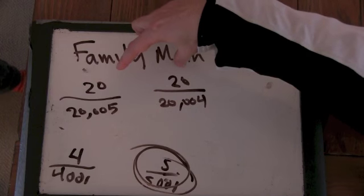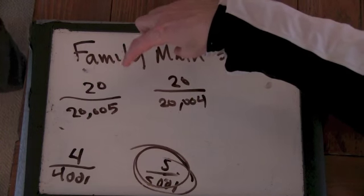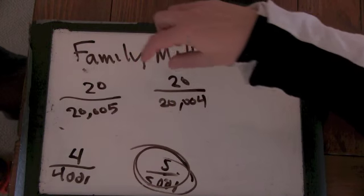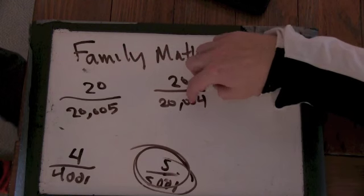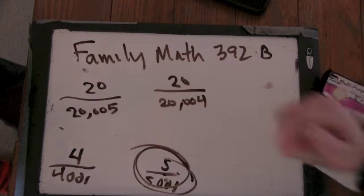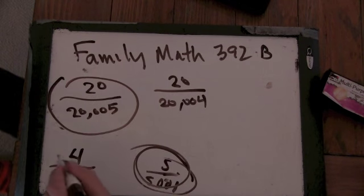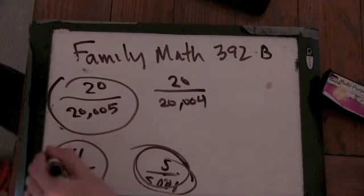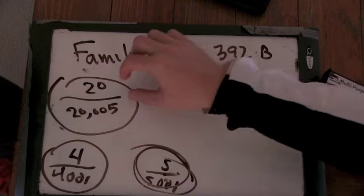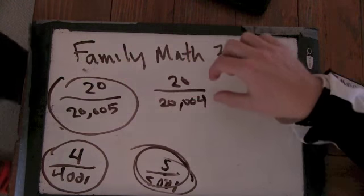So here we have a common numerator. And so sometimes having a common numerator makes things easy to compare, because we know 1 over 20,004 is bigger than 1 over 20,005. And we have 20 of them both, so that means this one's smaller.